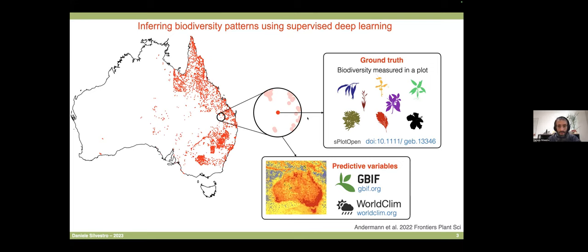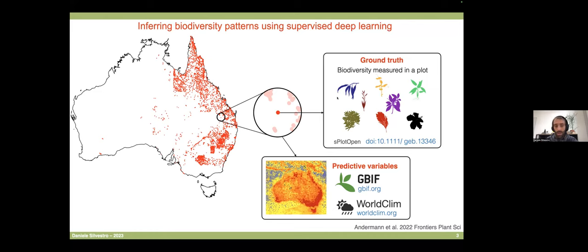The GBIF data spans the entire world and records species information from hundreds of thousands of species with billions of records. We also have climatic data covering the whole world. So we have lots of databases with predictive value for understanding biodiversity patterns, spanning the world — but accurate, human-collected biodiversity data is much more sparse. Here we can use supervised deep learning to map these predictive variables onto predictions of biodiversity.